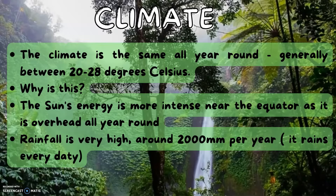Climate: the climate is the same all year round, generally between 20 to 28 degrees Celsius. Why is this? The sun's energy is most intense near the equator, as it is overhead all year round. Rainfall is very high, around 2,000 millimeters per year, and it rains daily.